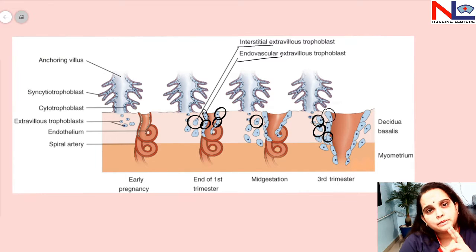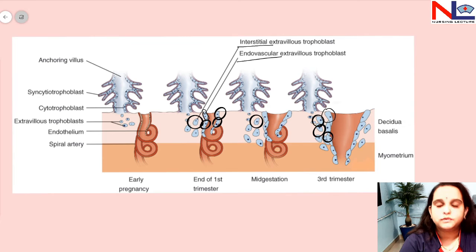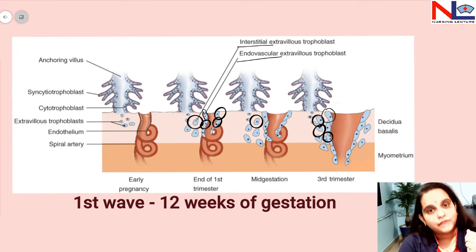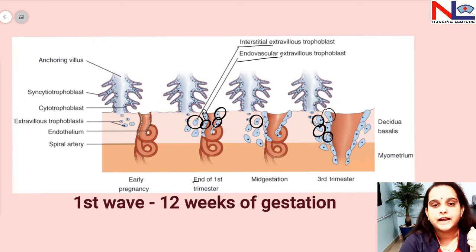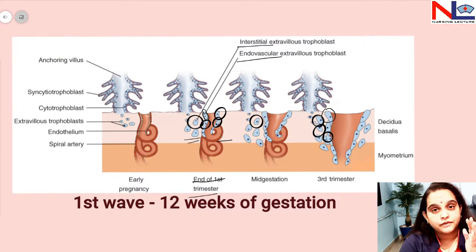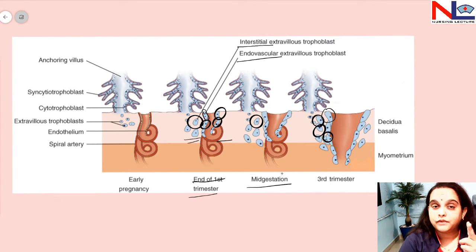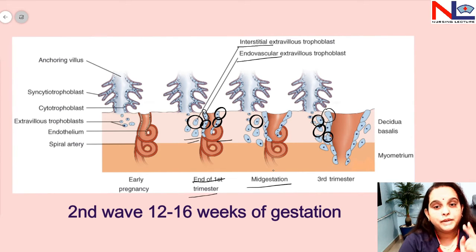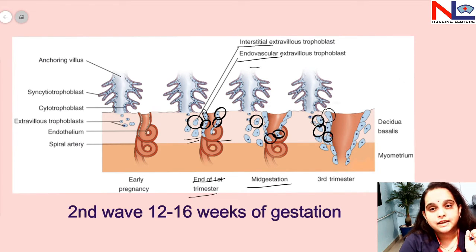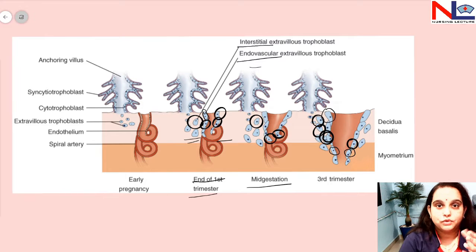This invasion takes place in two waves. The first wave appears post-fertilization up to 12 weeks of gestation, invading spiral arteries at the level of the decidua or endometrium. In mid-gestation — around 12 to 16 weeks, from the second to third trimester — the second wave appears. In the second wave, the endovascular as well as interstitial cytotrophoblastic cells invade the spiral arteries further and extend up to the level of the radial artery.